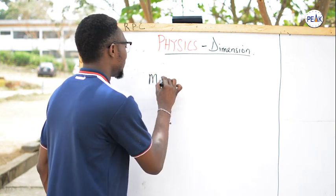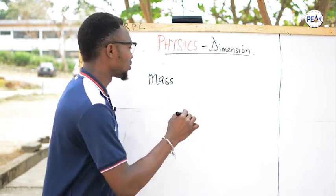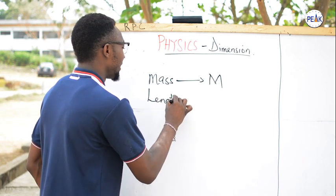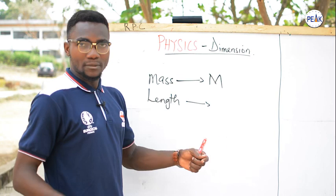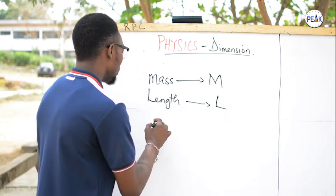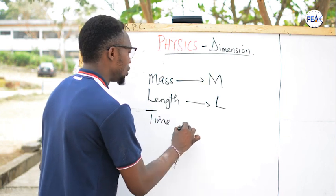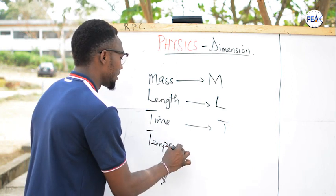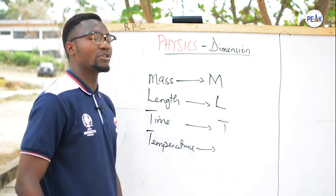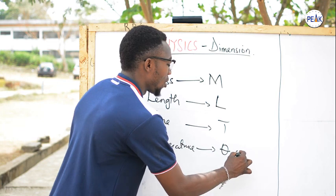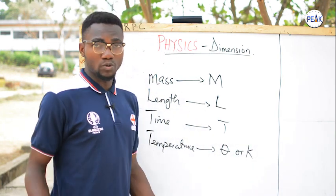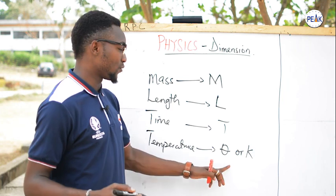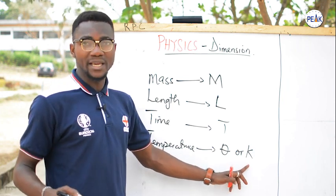Once you arrive at mass, you represent it with capital M. Once you arrive at length, or distance, or anything related to distance, you represent it with capital L. Once you arrive at time, you represent it with capital T. And once you arrive at temperature, you represent it with theta or K, depending on which you are comfortable with. For an objective question, check the options — if you see theta, work with theta; if you see K, work with K.